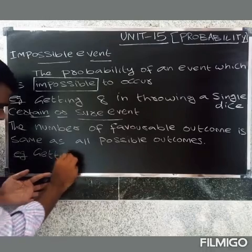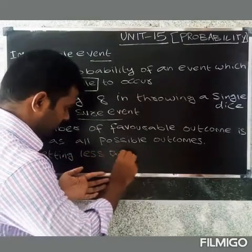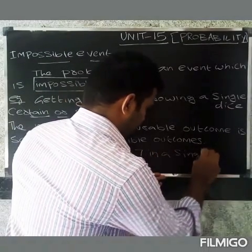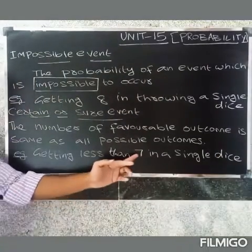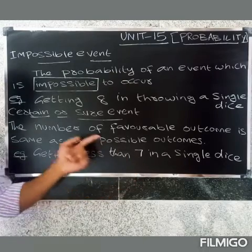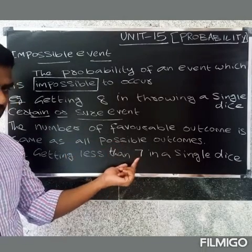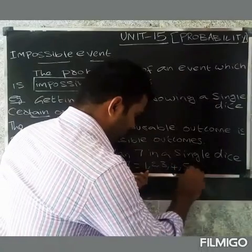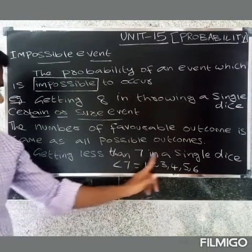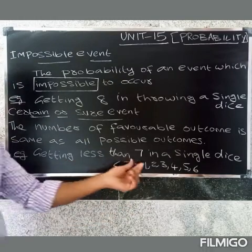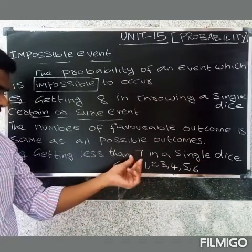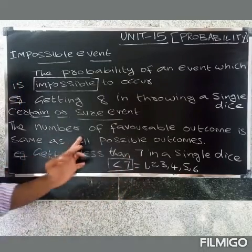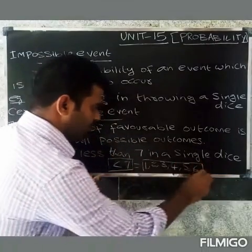For example, getting less than seven on a single die. The outcomes less than 7 on a die are 1, 2, 3, 4, 5, 6 — all six faces. The number of favorable outcomes is the same as all possible outcomes, so this is a certain event.